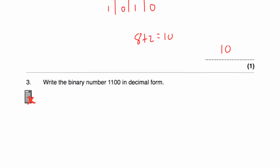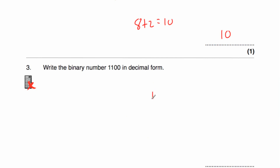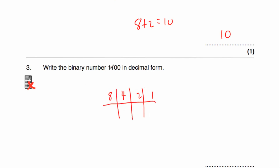Question three. Again, doing our columns: start off with 1, multiply by 2 is 2, multiply by 2 is 4, multiply by 2 is 8. We've got our four columns, and the number is 1100. So no 1s, no 2s, one 4 and one 8. So 8 plus 4 equals 12. The binary number 1100 in decimal form is 12.